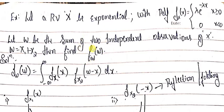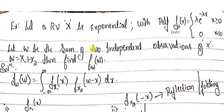To obtain the pdf of W, since W is the sum of two independent observations of the same random variable, we need to convolve f(x) with itself. The formula represents the convolution between fx1(x) and fx2(w minus x).